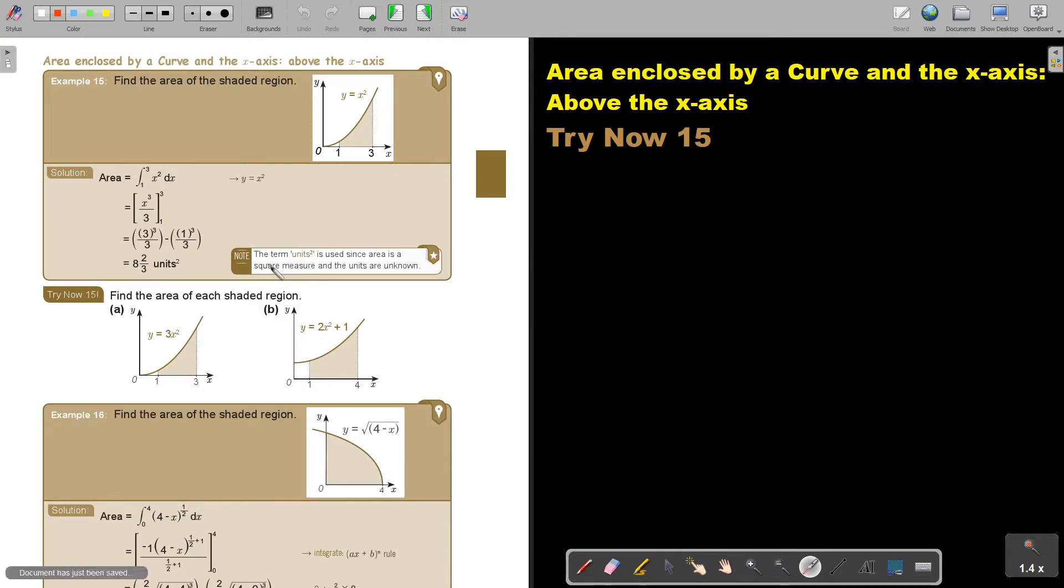Now if there's no units, the term unit squared is used since area is a squared measure and the units are unknown. So it's just to show that it's area. If it's centimeter, then it's centimeter squared. If it's meter, then it will be meter squared.